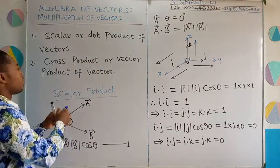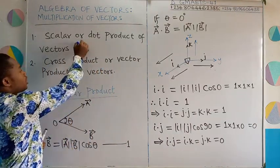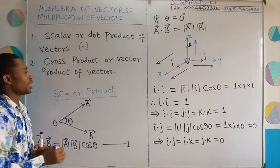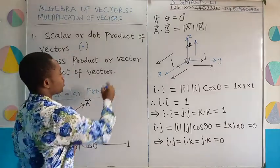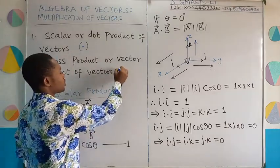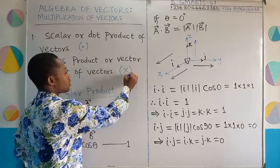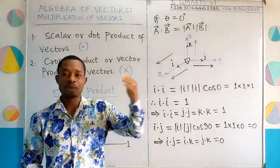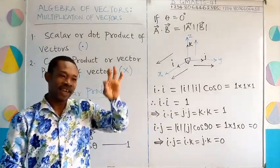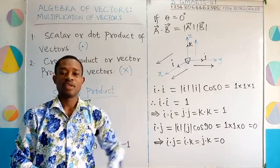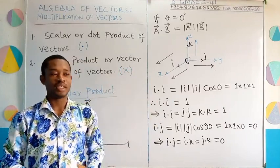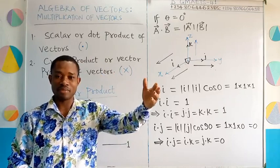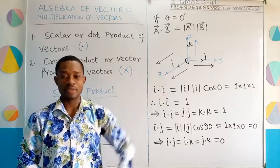For the scalar product of vectors, we simply use a dot to show that. And then the cross product of vectors, we use a cross as a symbol. So if you have the scalar product of a and b, it is simply a dot b. If you have the cross product of a and b, it is simply a cross b — like a multiplication symbol.